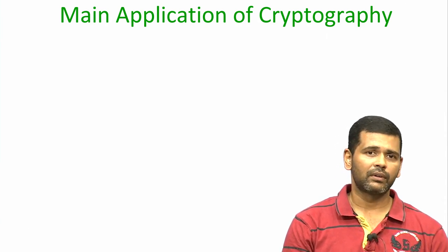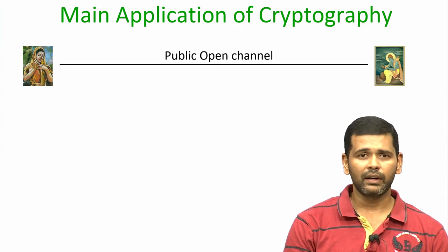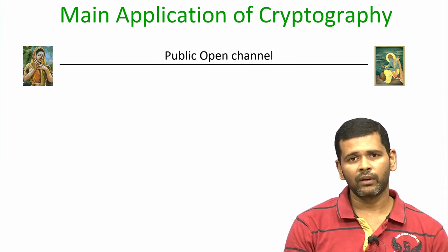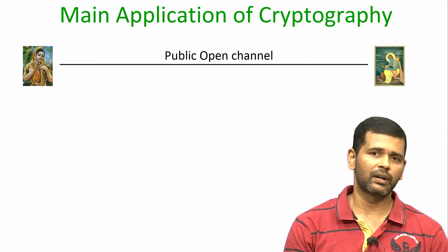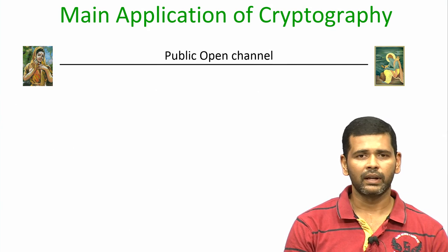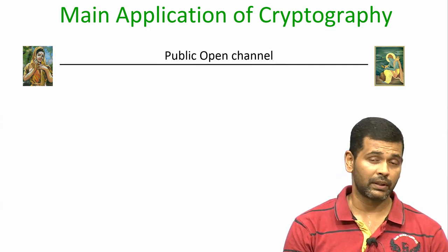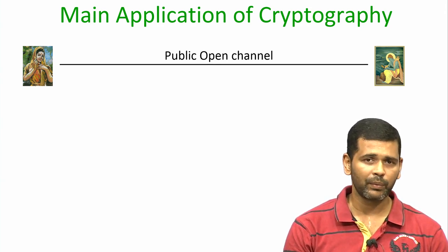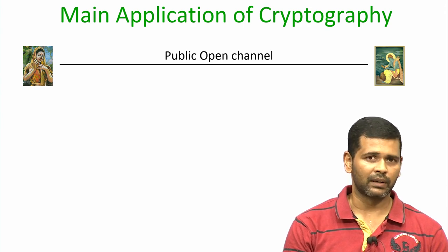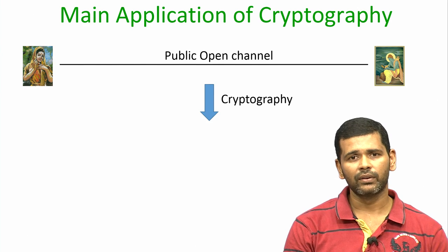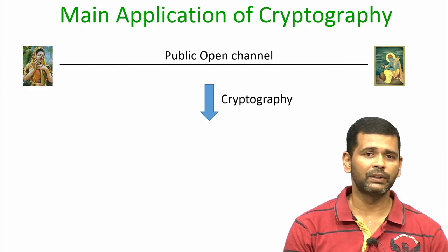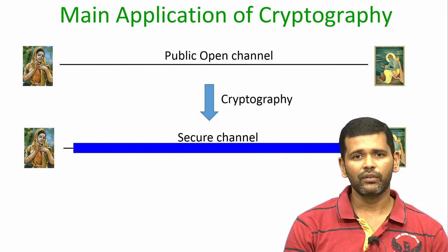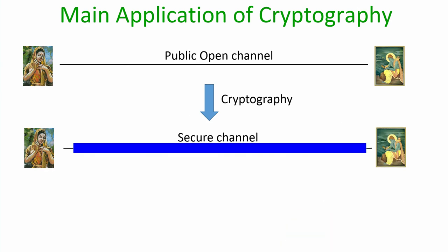Now coming back to the question of what is the main application of cryptography: the central problem addressed by cryptography is that of secure communication. What I mean by secure communication is imagine the following scenario — you have a sender and a receiver who do not know each other, who are meeting for the first time over the internet, they do not share any kind of pre-shared information, and they are connected by a public open channel. The main goal of cryptography is to somehow convert this public open channel into some kind of virtual secure channel through which sender and receiver can do secure communication, and the three properties of secure communication are as follows.